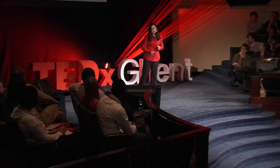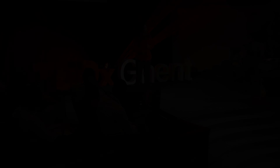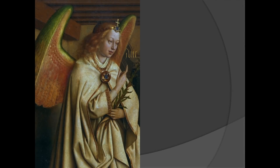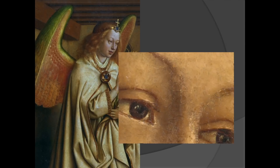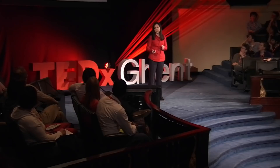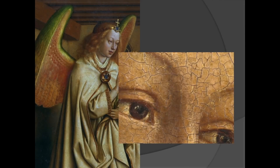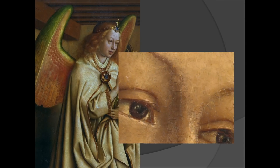I will show another example of virtual in-painting, on the panel of the Annunciation to Gabriel, which is also on the back side of the Ghent Altarpiece. You can see here the removal of cracks from the Angel's face. It might be interesting to study what the psychological effect and difference in perception of this painting would be, with and without the crack pattern.